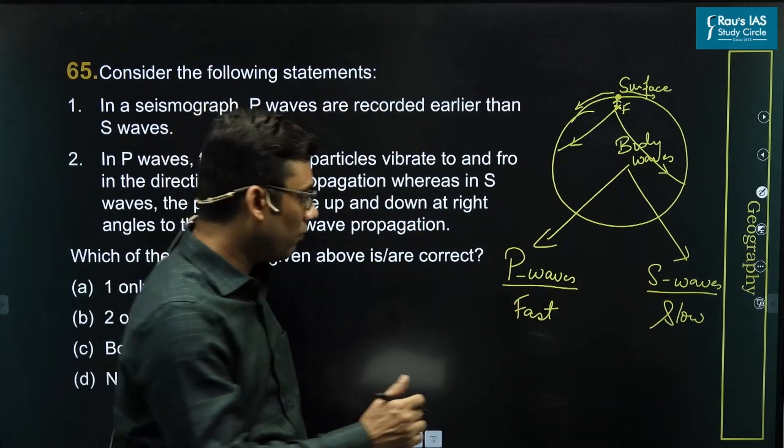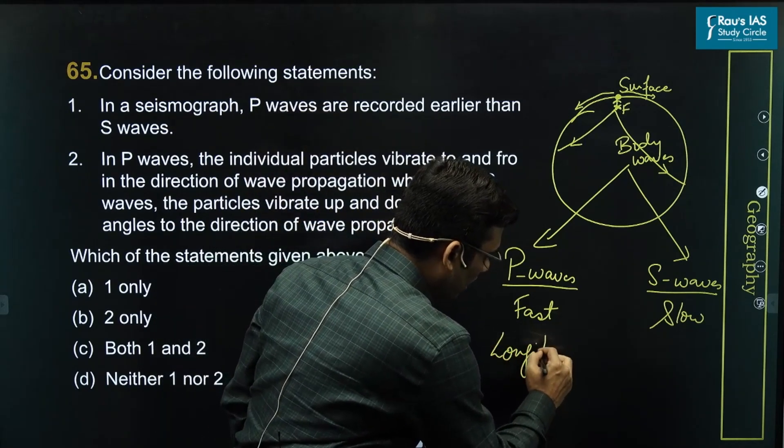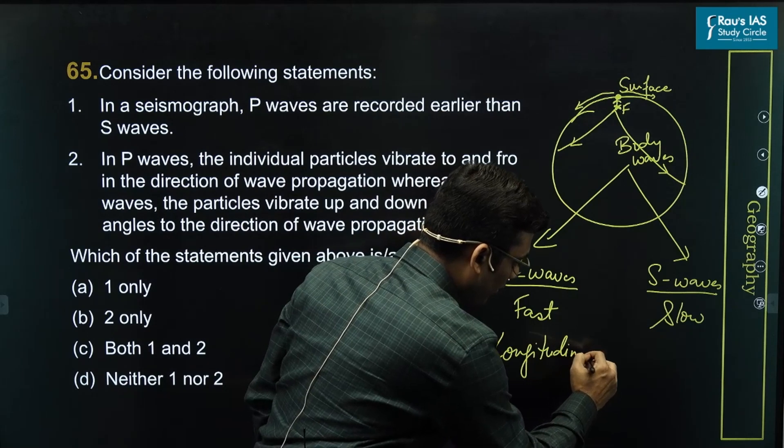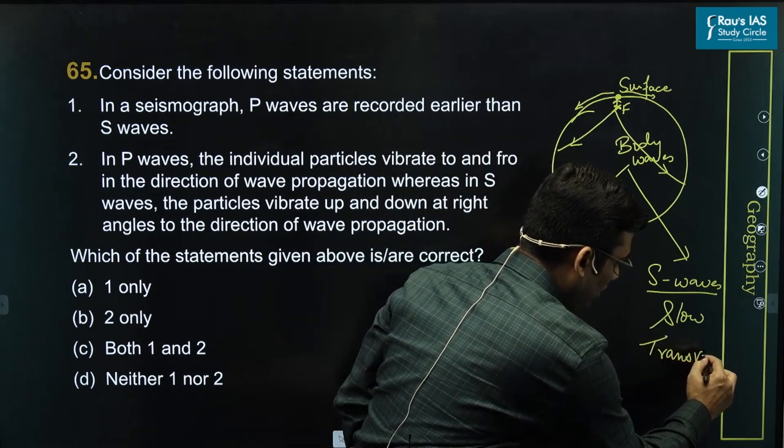Second basic difference between P and S waves that we see is mainly that the P waves are longitudinal in nature, whereas S waves are transverse in nature.